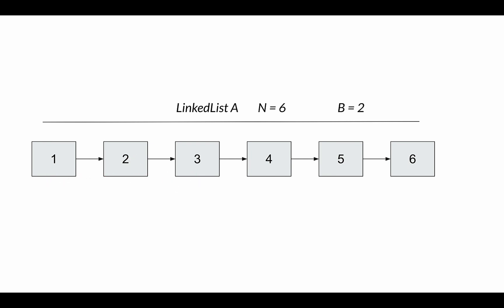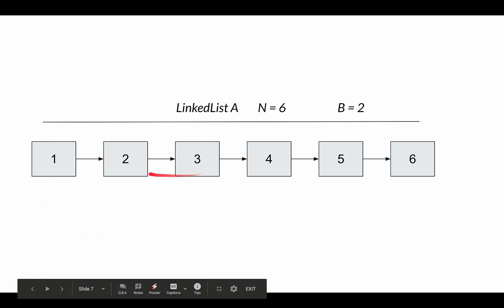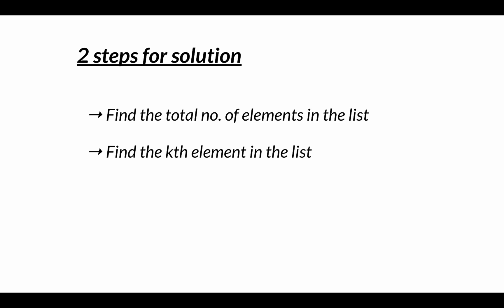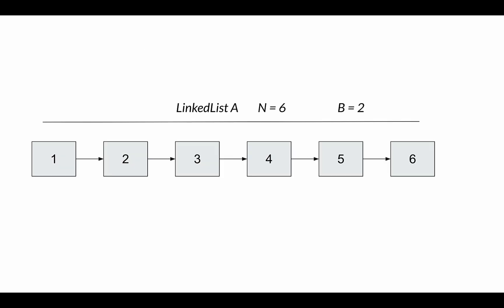Instead of going to the center and trying to traverse in reverse towards the head — which is not possible in a singly linked list — we find the position of the kth element from the beginning of the linked list, so that we can traverse forward from beginning to end. That is what the two-step solution is about.